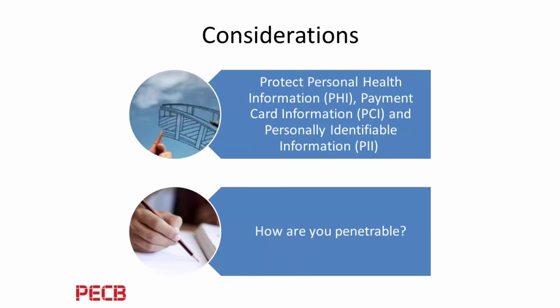So what are some things to consider? We talk about personal health information (PHI), payment card information, and personally identifiable information (PII). The reason these are the most prevalent is that when you're protecting your information security, these are the areas that most companies are worried about being breached. You should also consider research you're doing or any information your corporation considers important that you would not want to get out to a competitor.